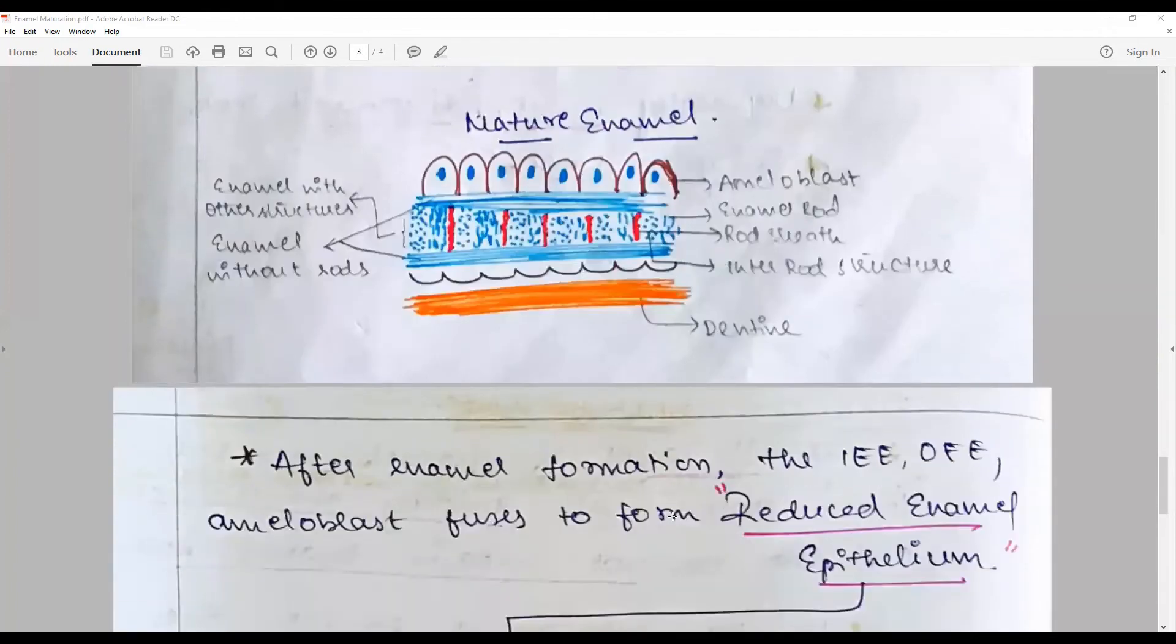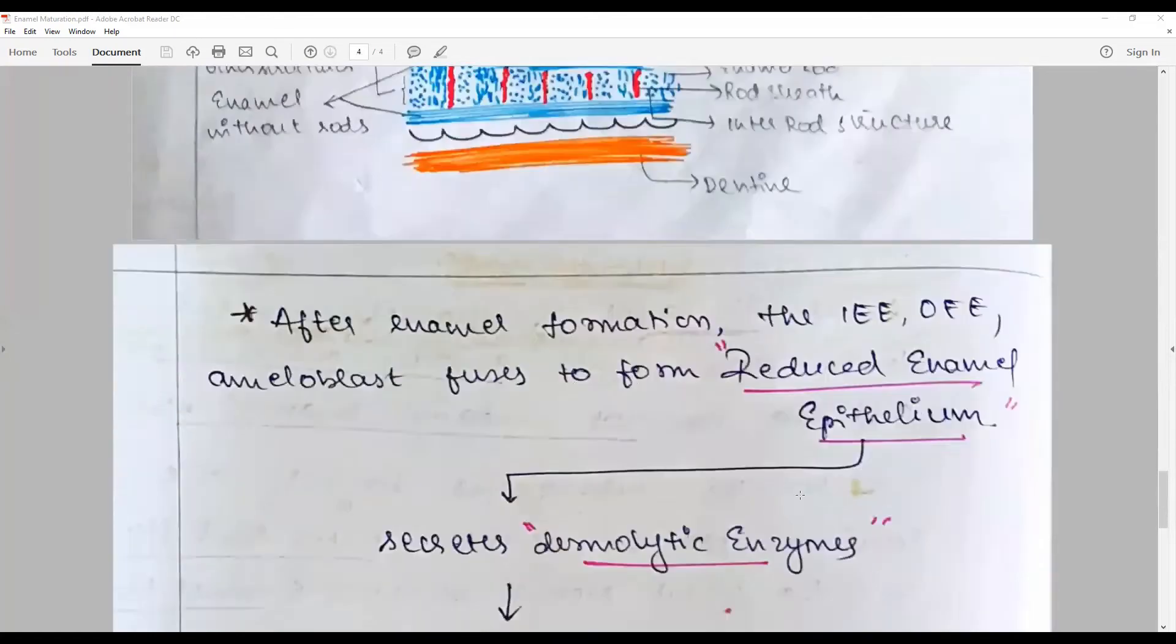After enamel formation, the inner enamel epithelium or the post-functional ameloblasts and outer enamel epithelium collapse and join together because of the loss of stellate reticulum and stratum intermedium to form what we call the reduced enamel epithelium.